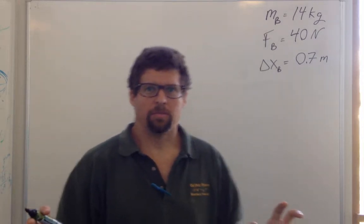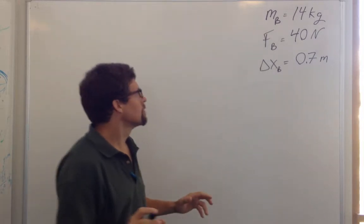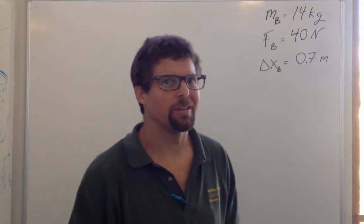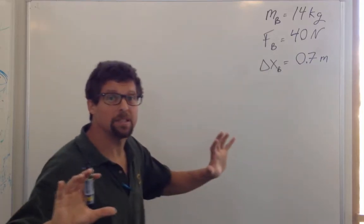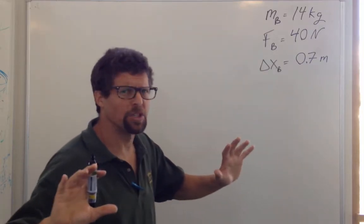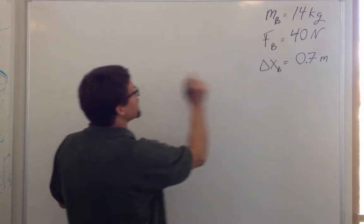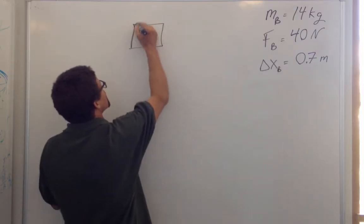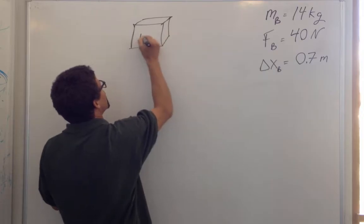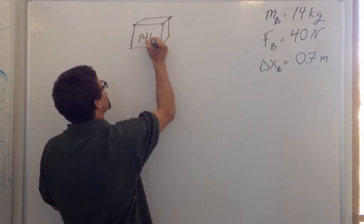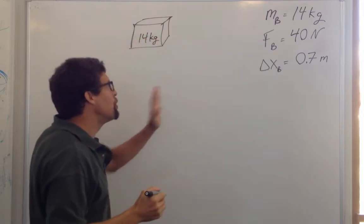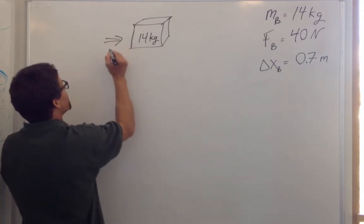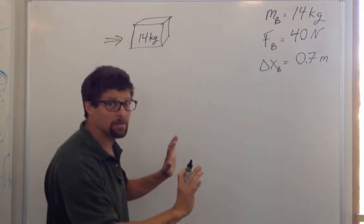Let's solve our first physics problem — our first physics opportunity. Imagine you're out in space, no friction. There's a box, its mass is 14 kilograms, and you put a force of 40 Newtons on it, and you start at rest.